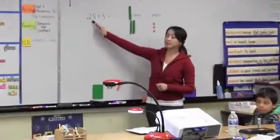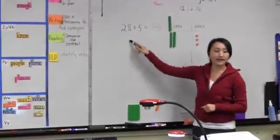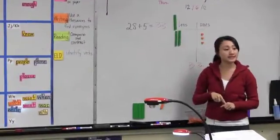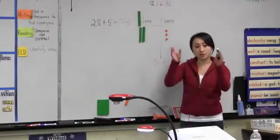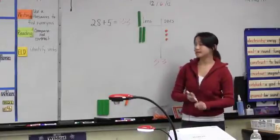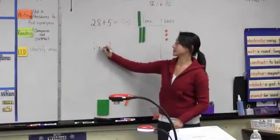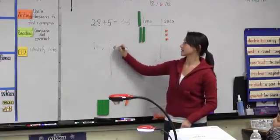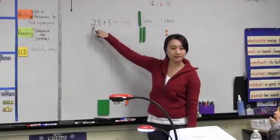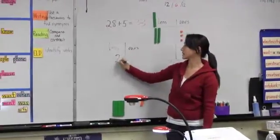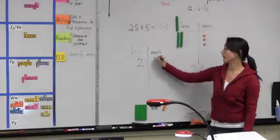If we have a problem like this written across, to add it on paper, the first thing I need to do is write it going down. So I'm going to take twenty-eight. Here's my tens place, here's my ones place. What place value should I put the two in? The tens. What place value should I put the eight in? The ones place.